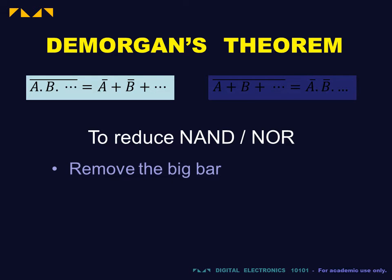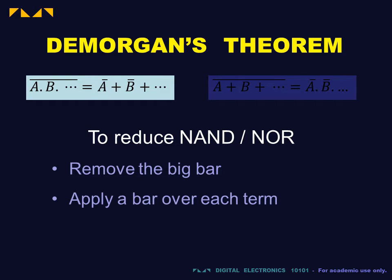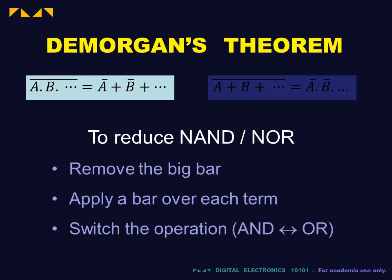First, remove the overarching bar from above the expression. Second, apply a bar instead to each term of the expression. Third, switch the operation — in this case AND — to OR.